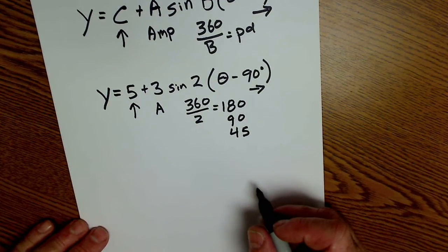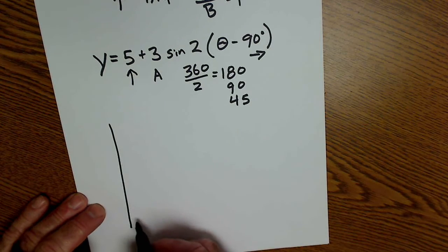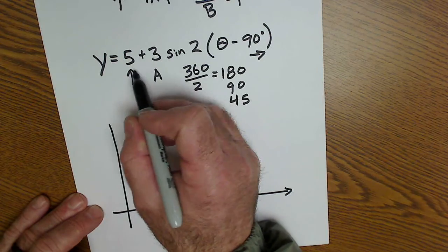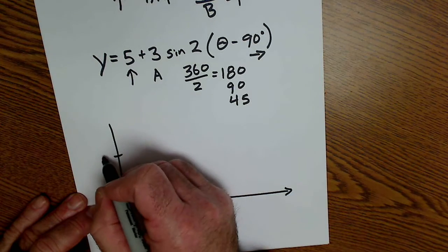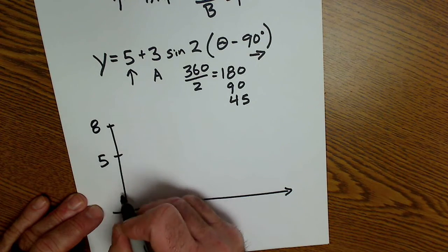Step 1, mark up the equation. Step 2, label your axes. Label your y-axis first. These two values affect your y-axis. From 5, I go up 3 to 8, down 3 to 2.